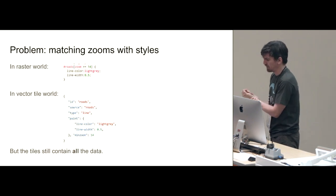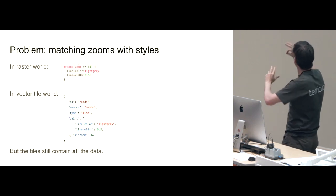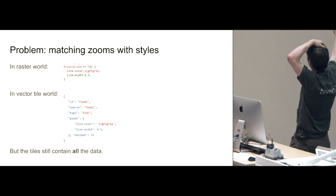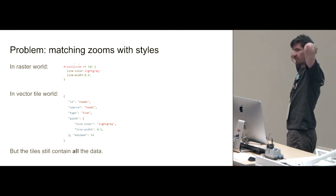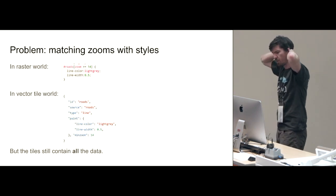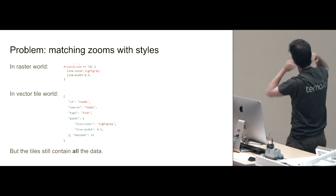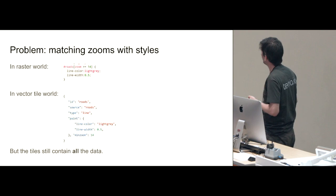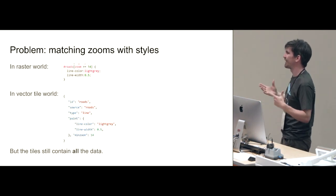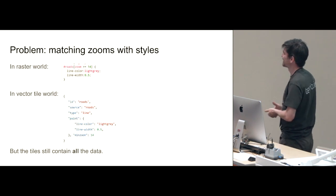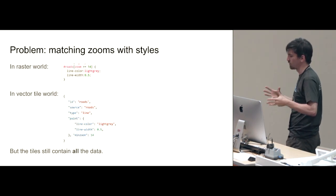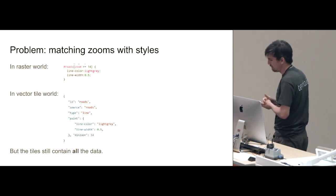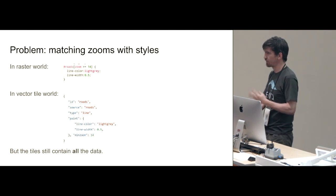There's another problem that's a bit complicated to explain. With TileMill, if you say you only want roads to appear at zoom 14 and above, that's the end of the story. But if you do the same thing with vector tiles — saying roads should only show up at zoom 14 and above — your roads might still be present in your vector tile dataset at zoom 12. Now you're wasting data and probably running into problems with too much data in your tiles. It's messy and awkward, and I have four different solutions.